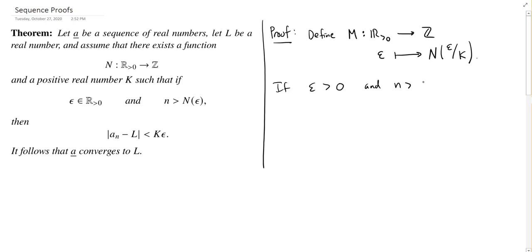So if epsilon is some positive real number, and little n is greater than the eventually number, now using M for epsilon, which is equal to N of epsilon over K,